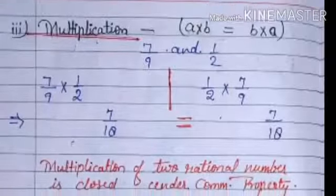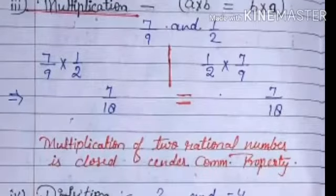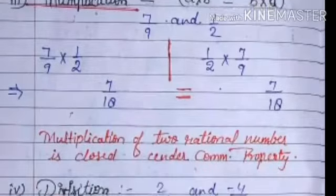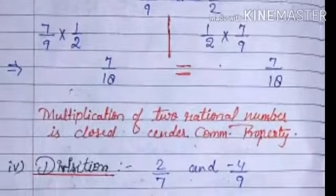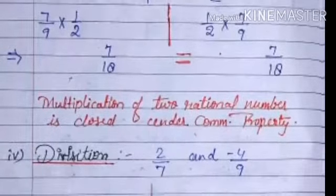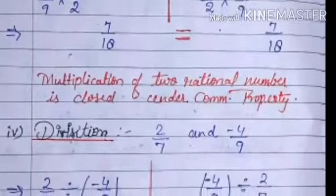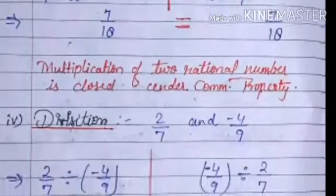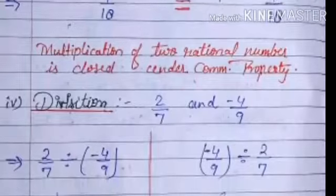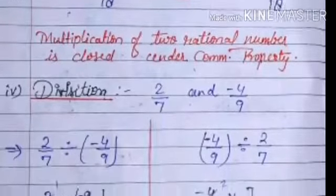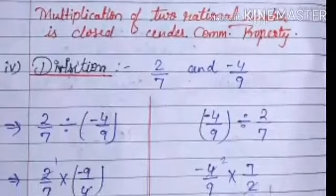Next we will check commutative property for multiplication — whether a multiplied by b equals b multiplied by a. Taking two rational numbers seven upon nine and one upon two, we multiply seven upon nine by one upon two on one side, and one upon two by seven upon nine on the other. Both sides give seven upon eighteen, which are equal. So we can say multiplication of two rational numbers is closed under commutative property.